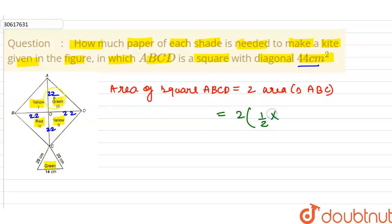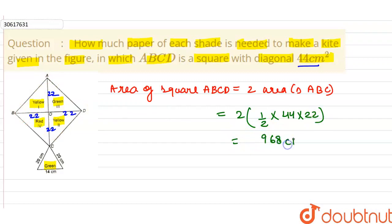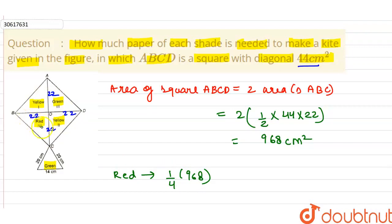The area of the triangle is half into base into height. The base is 44cm and the height is 22cm. So the area is 968 cm². The red area is one-fourth of 968 cm², which gives 242 cm². So the red shade area is 242 cm².